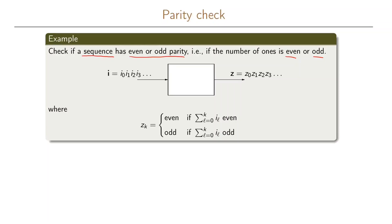A block diagram of our system can be as follows. We want to realize this system as a state machine. We have as input i0, i1, i2, i3 and so on, and as output we have z0, z1, z2 and so on. We define the output such that the k-th output bit is even if the sum of the previous input bits is even, and the output bit is odd if the sum of the previous input bits is odd.